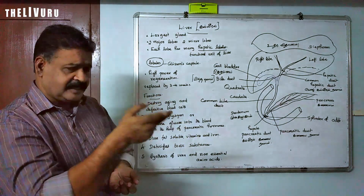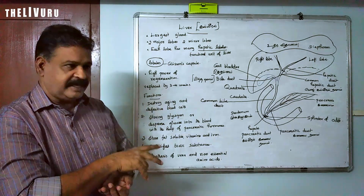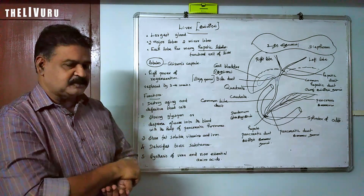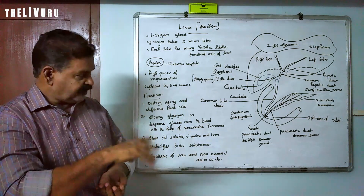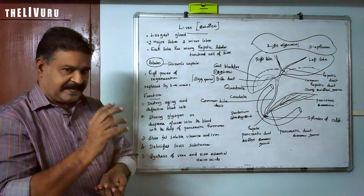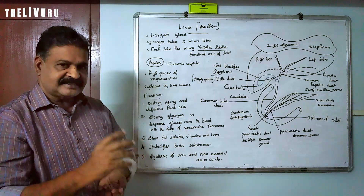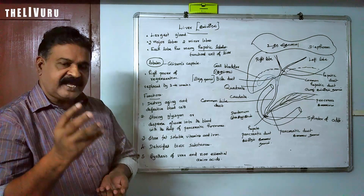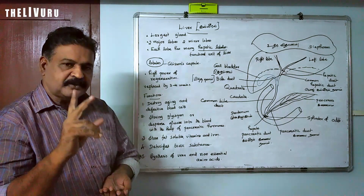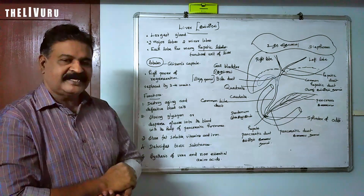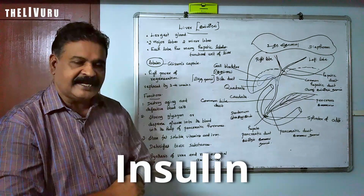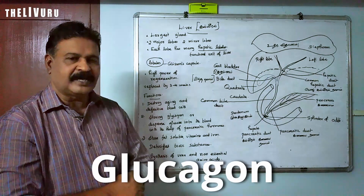The pancreas is both an exocrine and endocrine gland — it is a dual gland. Apart from that, the pancreas secretes two very important hormones: one is insulin and the other is glucagon.